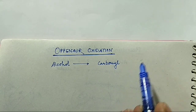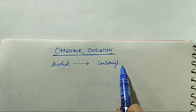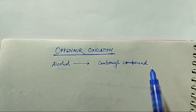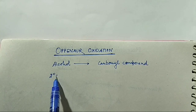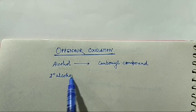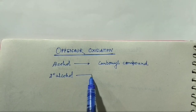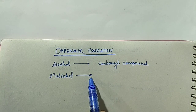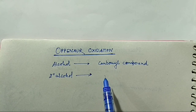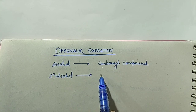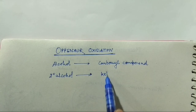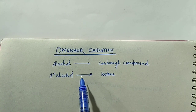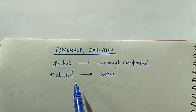Here also the double bond is not affected. So especially this is used for the conversion of secondary alcohol — that is unsaturated alcohol — because the double bond is not affected at all. So double bond-containing alcohol can be used without affecting the double bond. Secondary alcohol is converted into ketone.